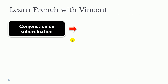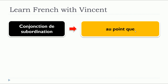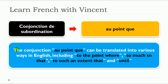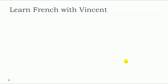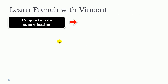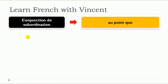This lesson is about au point que. The conjunction au point que can be translated into various ways in English, including: to the point where, so much so that, to such an extent that, and until. We will see a few examples with au point que.